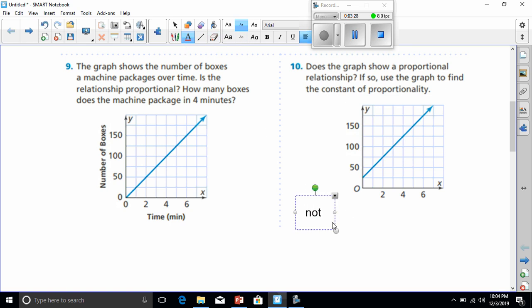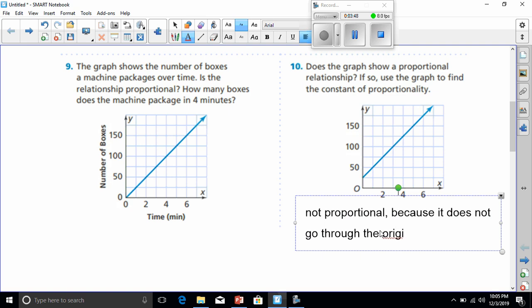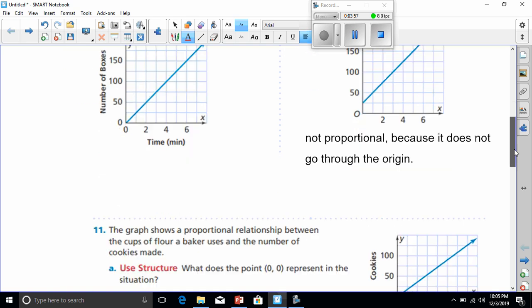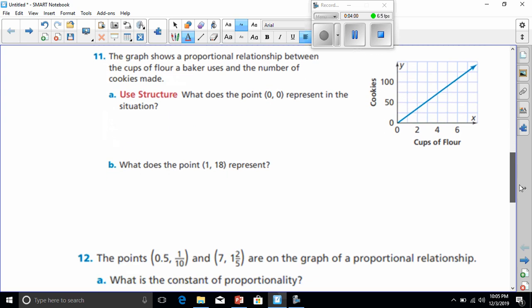So, this is not proportional because it does not go through the origin. And because it's not proportional, we do not have to find the constant of proportionality. It says if it was, to find it, and it is not.